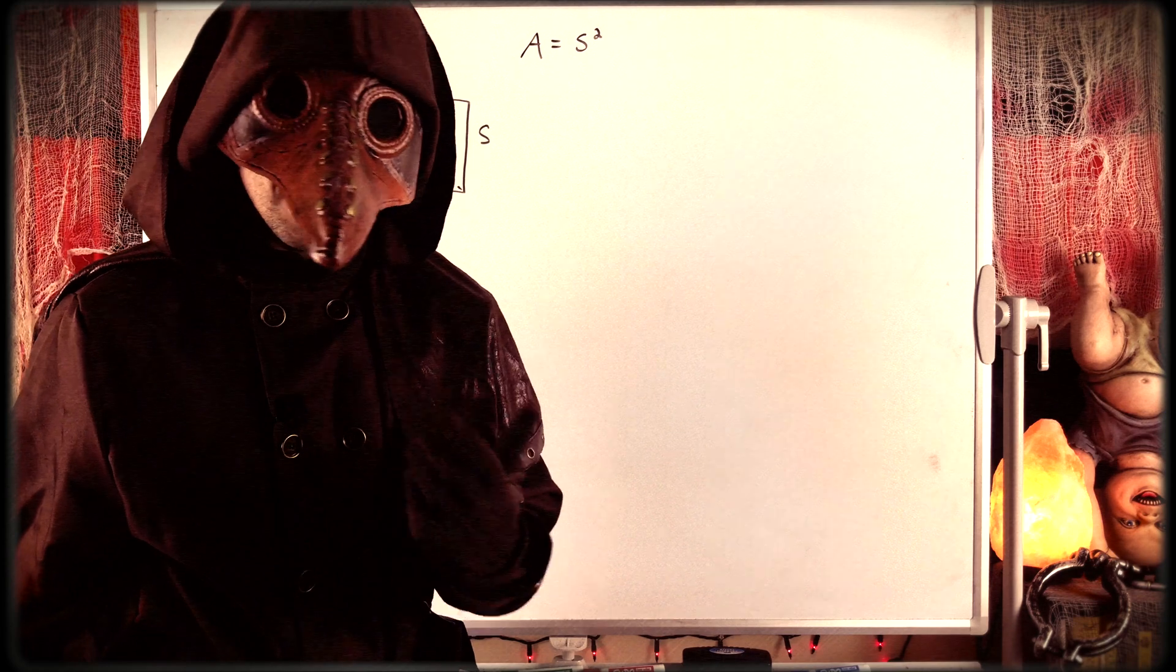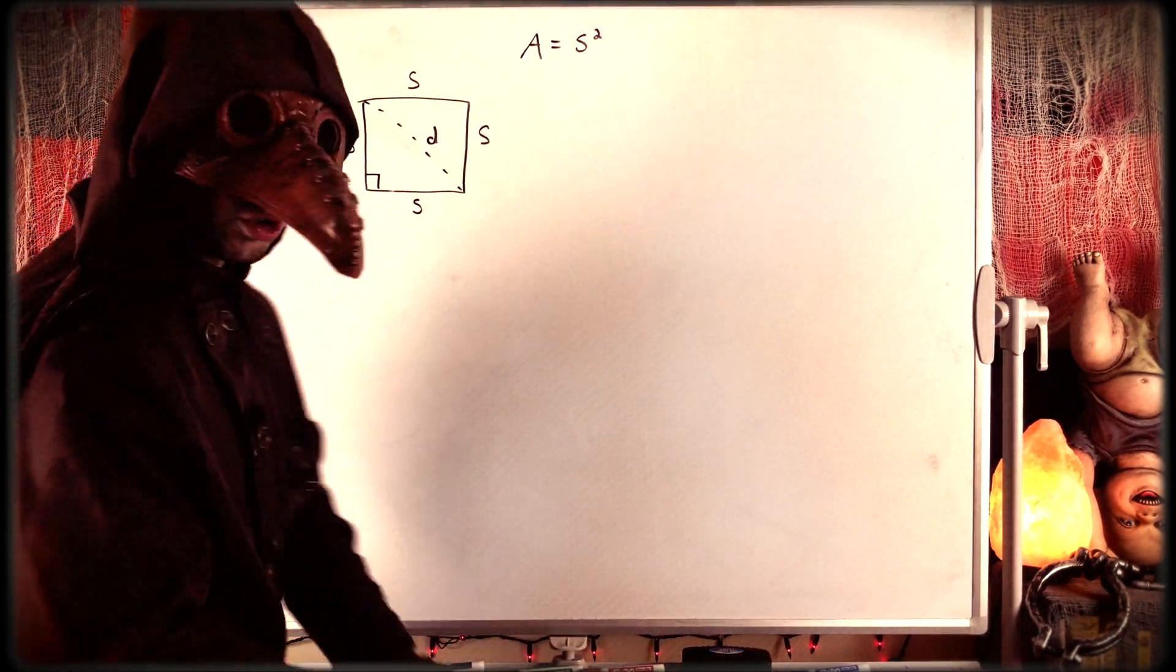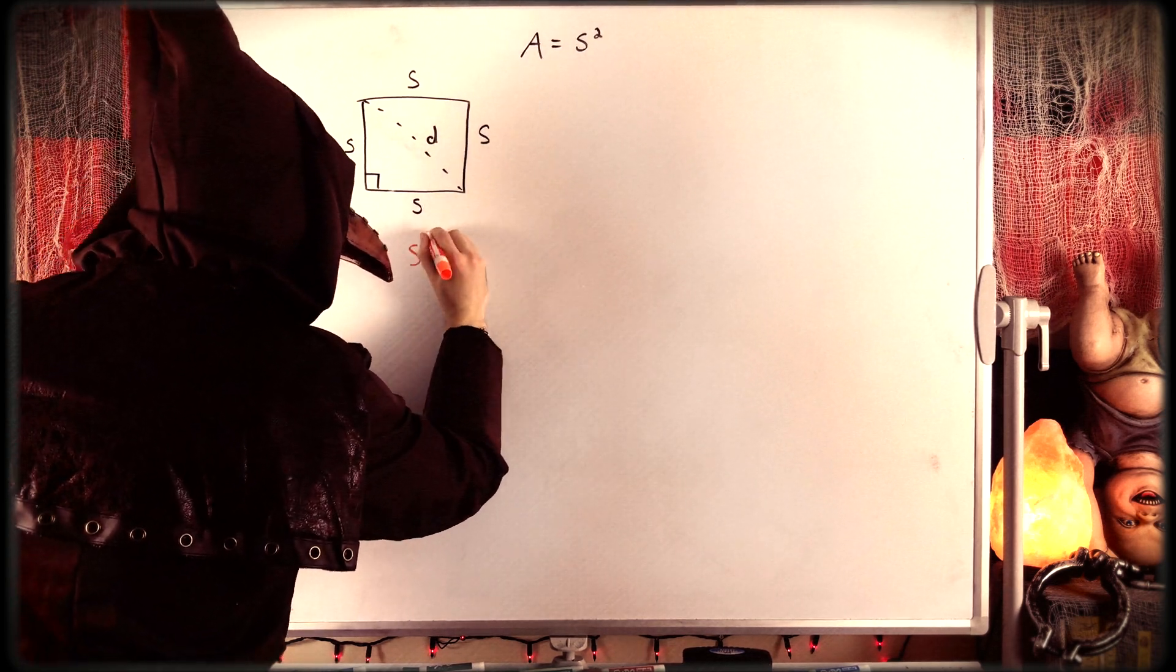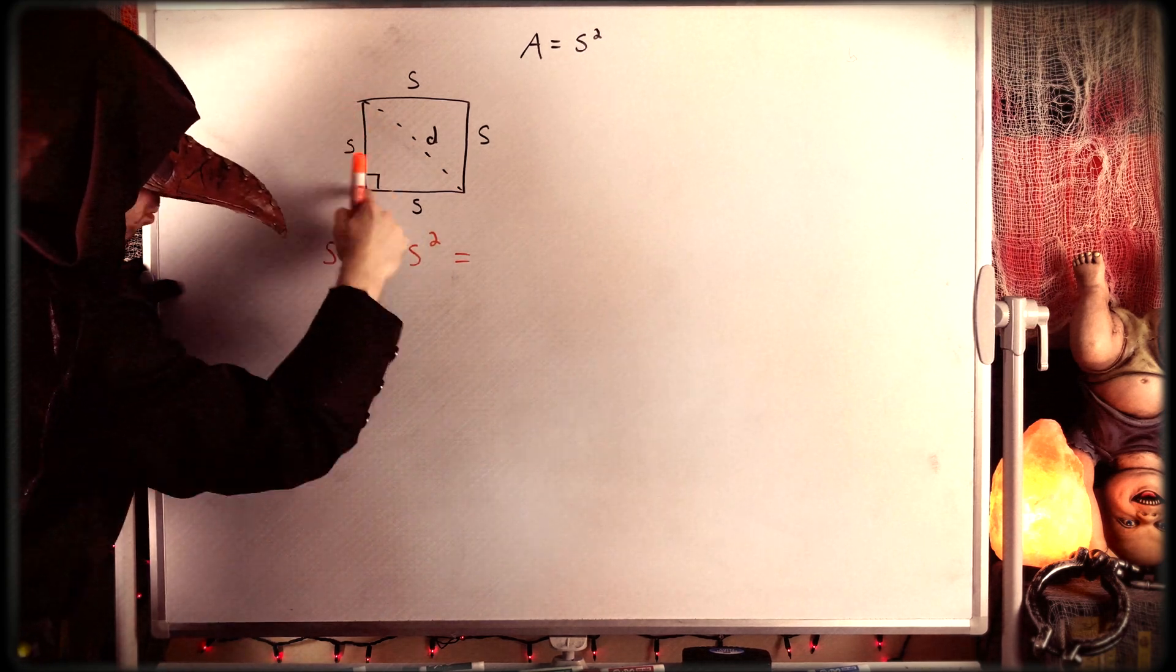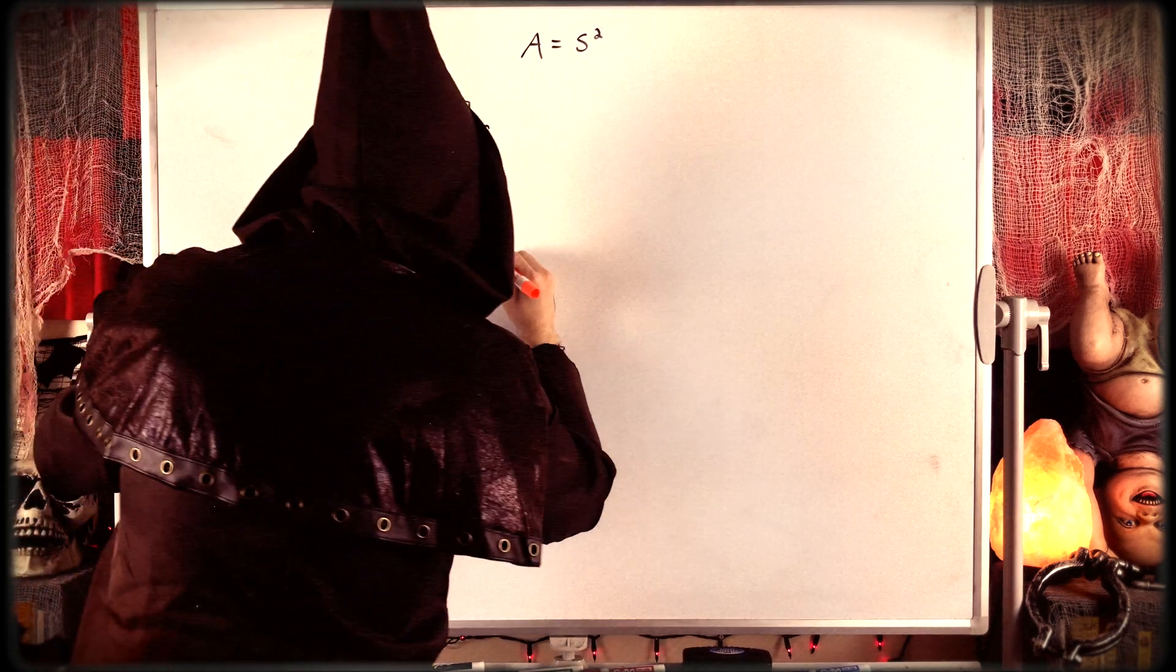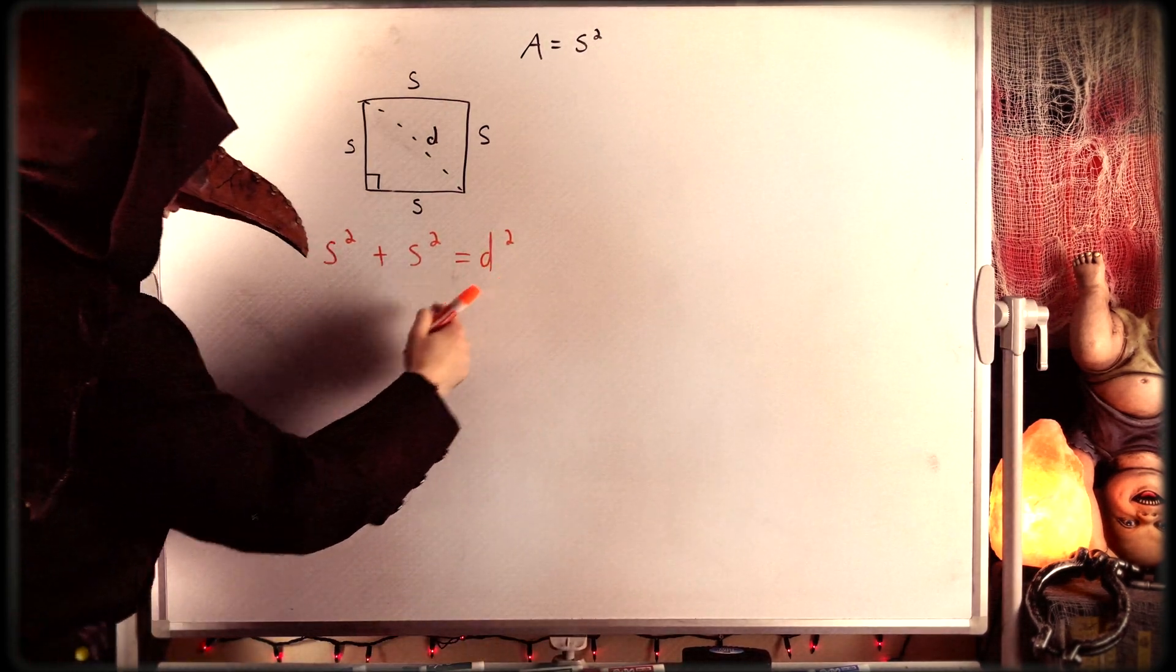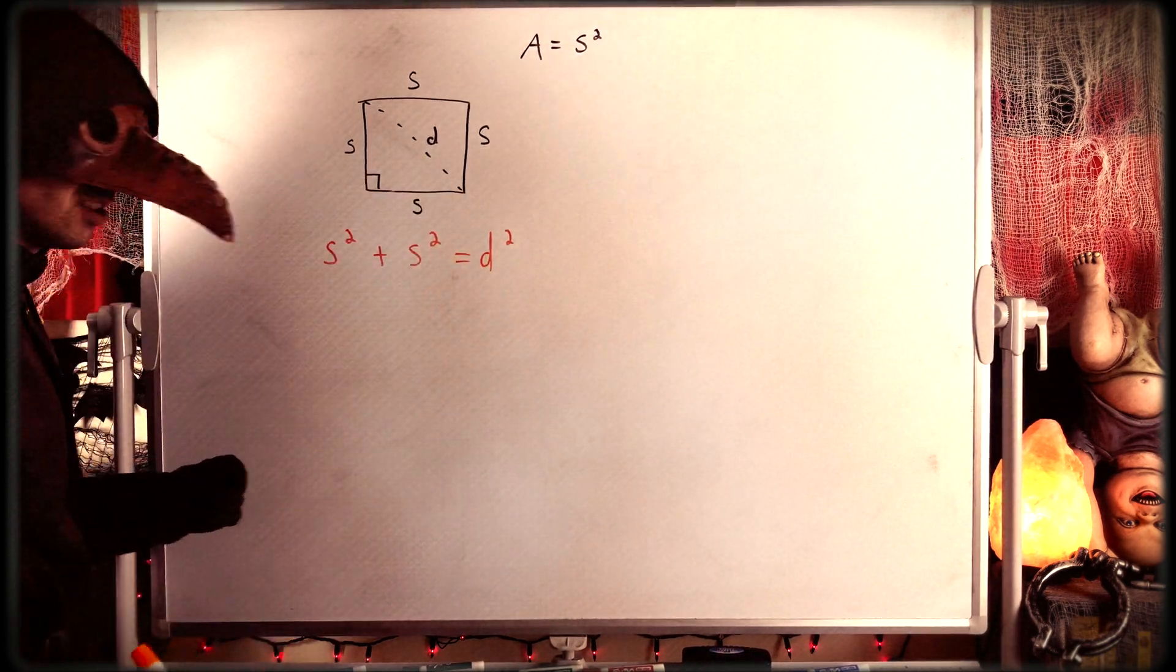And what does the Pythagorean theorem tell us about right triangles? Well, it tells us that the sum of the squares of the leg lengths of a right triangle, say that again, the sum of the squares of the leg lengths of a right triangle, so in this case these are the legs of our right triangle, so the sum of those squares, S squared plus S squared, is equal to the square of the hypotenuse. Our hypotenuse is the diagonal of the square, which is D, and so the Pythagorean theorem tells us that S squared plus S squared is equal to D squared.